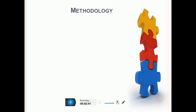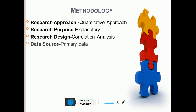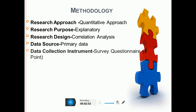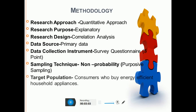After this, present the methodology slide including: research approach — quantitative; research purpose — explanatory; research design — correlational; data sources — primary; data collection instrument — a survey questionnaire based on a five-point or seven-point Likert scale; sampling technique — non-probability purposive; target population — consumers who buy energy-efficient household appliances, or whatever your target population is. Clearly mention it here.